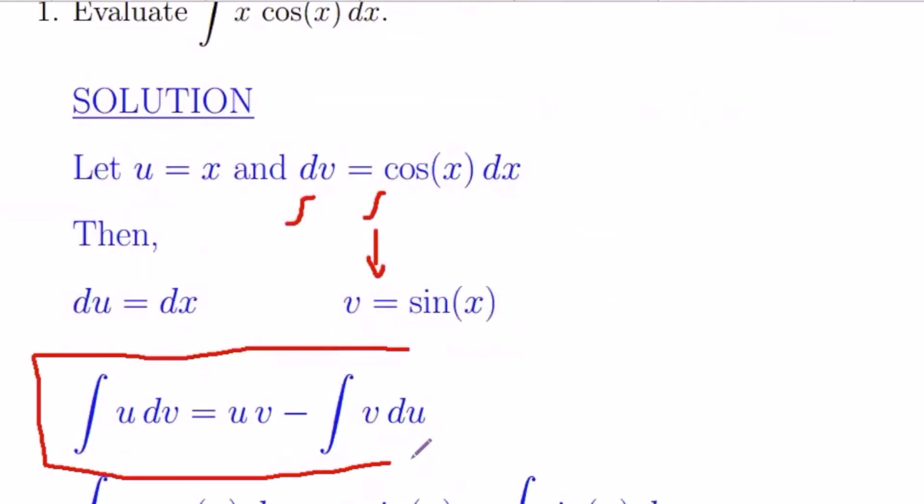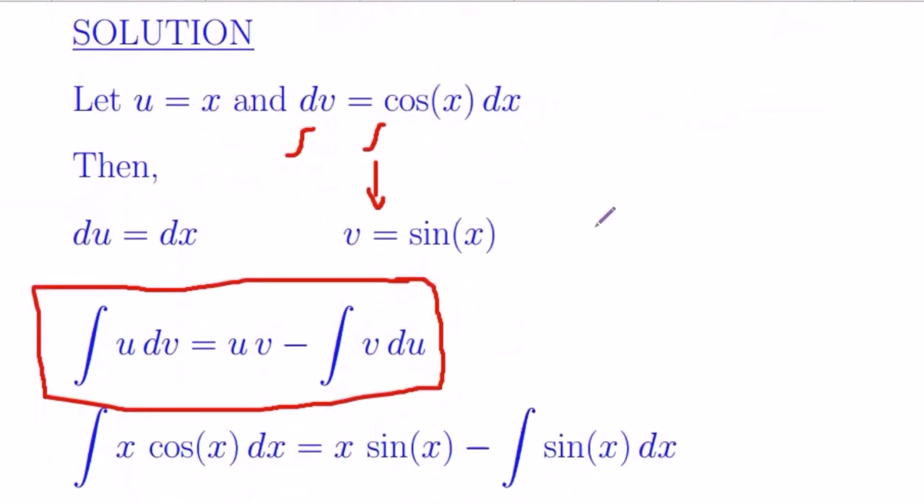So this is the equation we can use for integration by parts. My original equation is integration of u dv. I can write this as u v minus integration of v du. My u is x, my v is sine x. So this is my u v minus integration v.